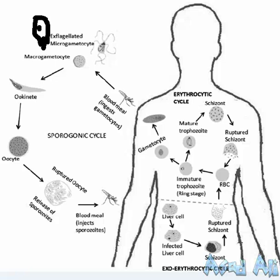After the ookinete attaches to the stomach wall of the mosquito, the fertilized nucleus divides and progressively the oocyst attaches to the stomach wall. The oocyst then ruptures because of the formation of sporozoites. After nuclear division, cytoplasm forms around them and sporozoites are hence formed. These sporozoites rupture the oocyst and move toward the salivary gland of the mosquito.